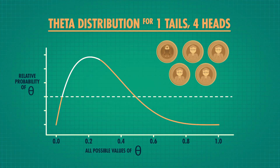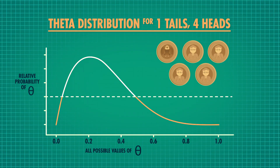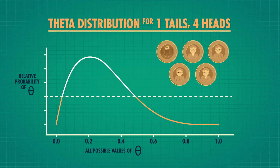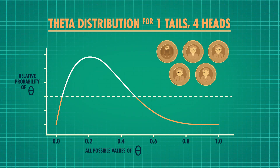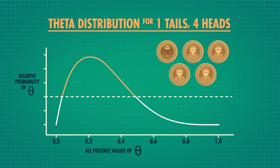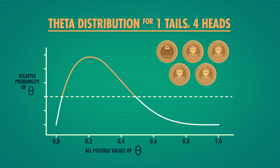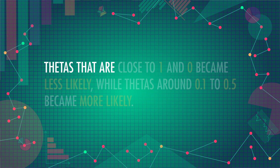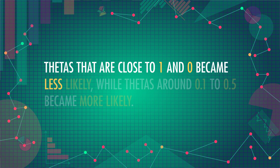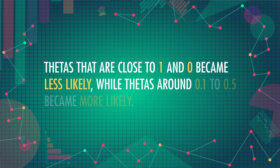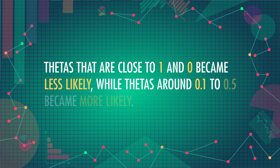Anything on the curve that is above the dotted prior line represents a theta that became more likely after we saw the data, and anything below the dotted line is a theta that became less likely. This matches our intuition — thetas close to 1 and 0 became less likely, while thetas around 0.1 to 0.5 became more likely. So maybe we have a fair coin here, but it seems more likely that it's biased.